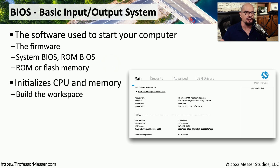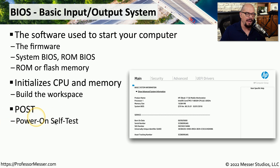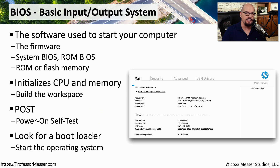When you power on your system, it initializes the memory and the CPU, and it begins executing the code of the BIOS. After the CPU and memory is initialized, you have the POST, or power-on self-test. This is not a comprehensive hardware diagnostics — it's merely checking to see if you have memory, CPU, video, and some type of input such as a keyboard or mouse. If all of those components are in place, your BIOS will look to see what you've configured to be the boot drive, and then it will look for a boot loader installed on that boot drive so that it can start the operating system.